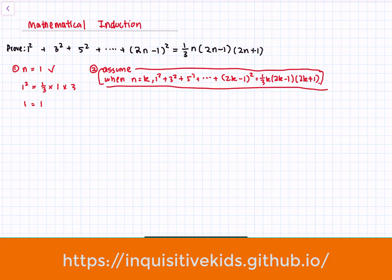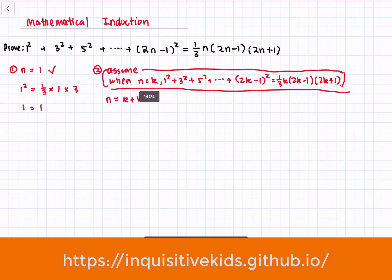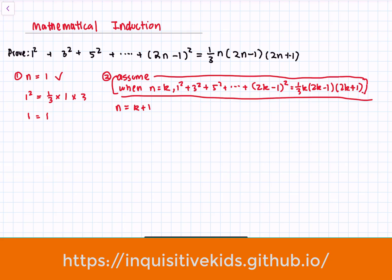Then our next step in using mathematical induction is to say what happens when n is equal to k plus 1. If this formula is still true when n equals k plus 1, then it means that the formula is true for any value of n. So we'll rewrite the equation in terms of k plus 1 — basically, wherever we see n, we replace it with k plus 1.